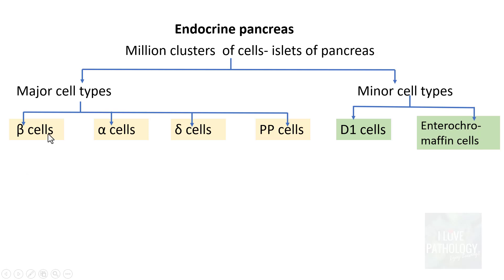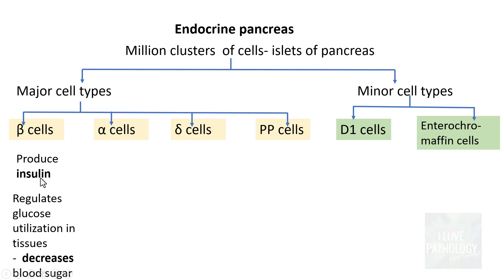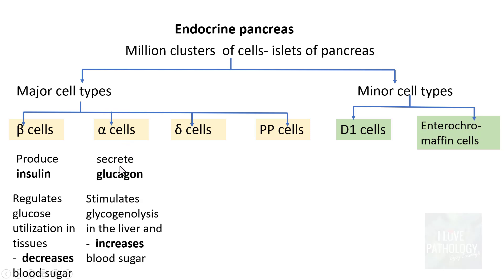Beta cells are the cells which produce insulin. Insulin regulates glucose utilization in tissues, thereby decreasing blood sugar levels. Alpha cells are the ones which secrete glucagon, which stimulates glycogenolysis in the liver, thereby increasing blood sugar levels. In terms of their function, beta cells and alpha cells are opposite in nature.